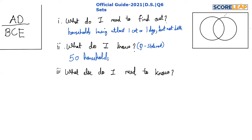I've drawn a chart here — this represents cat, this one is dog, and this is the total number of households. Let me denote: at least one cat only as x, at least one dog only as y, at least one cat and dog (the intersection) as z, and households with no cats or dogs as w.